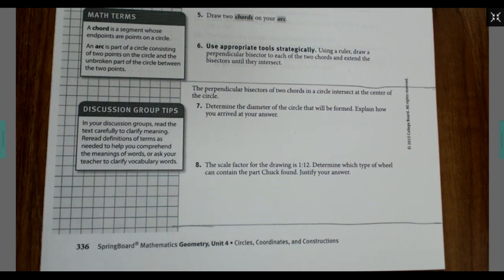All right, our last section says the perpendicular bisector of two cords in a circle intersect at the center of the circle. Determine the diameter of the circle that will be formed and explain how you arrived at your answer. Eight, the scale factor of the circle is 1 to 12. Determine which type of wheel can contain the part Chuck found and justify your answer.